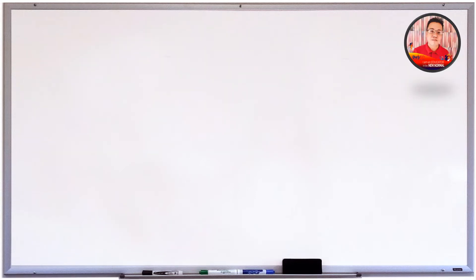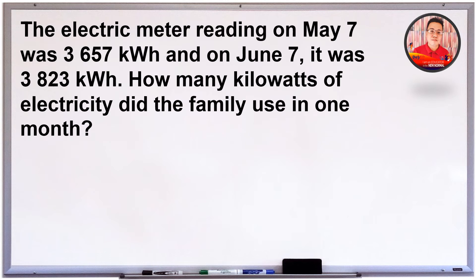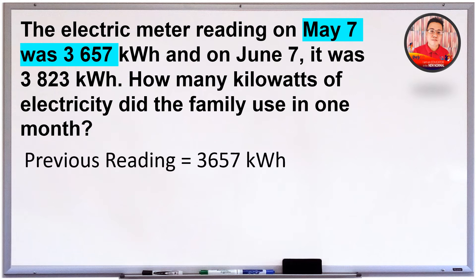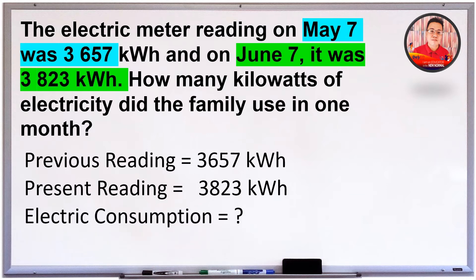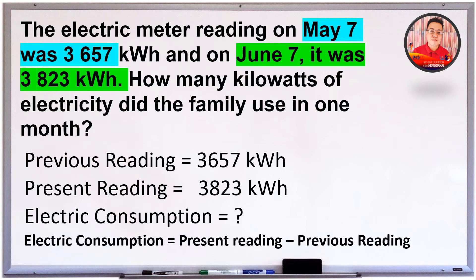Subukan naman natin ang word problem na ito. The electric meter reading on May 7th was 3,657 kWh, and on June 7th it was 3,823 kWh. How many kilowatts of electricity did the family use in one month? Sa May 7th, ang electric meter reading ay 3,657 kWh — yun ang ating previous reading. Sa June 7th naman, ang electric meter reading ay 3,823 kWh — yun ang ating present reading. Ang hinahanap natin ay electric consumption. Ang formula na gagamitin natin ay present reading minus previous reading.